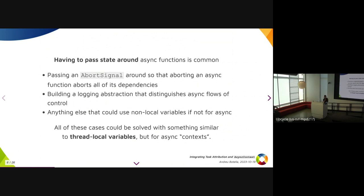Passing state around async functions is a common problem. For example, passing an abort signal around so that when you abort an async function you're also aborting all its dependencies. Or if you're building a logging abstraction that wants to distinguish async flows of control, you have no way to do that other than having user code pass that state around — things that would just use local variables if the code were synchronous.